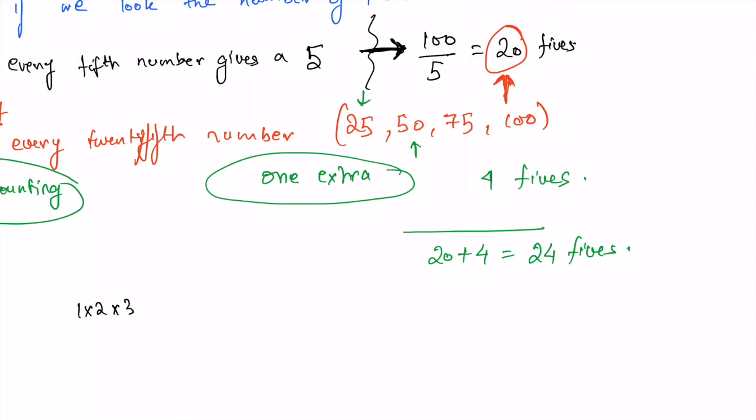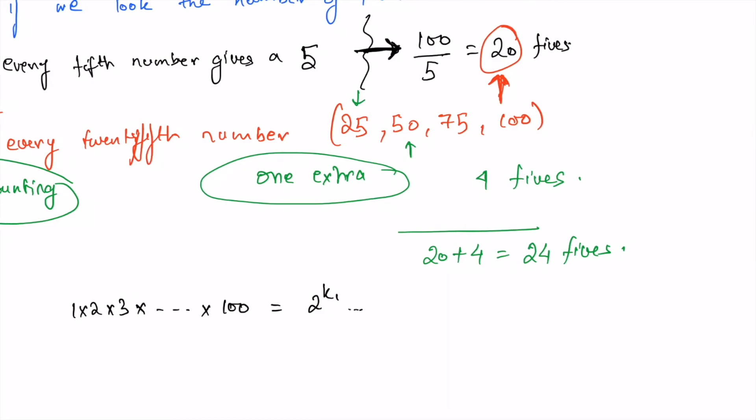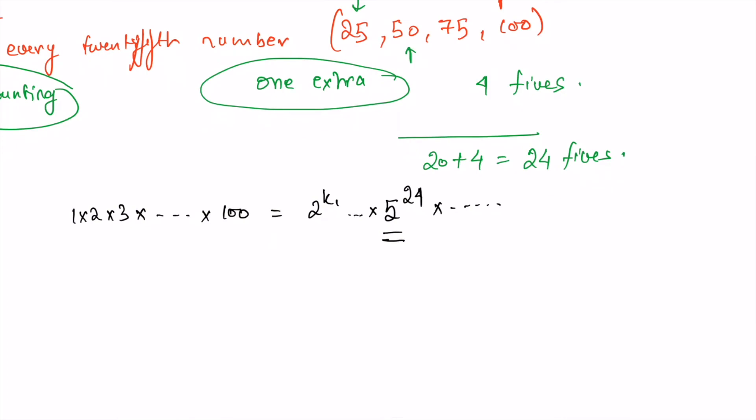So this product, one times two times three up to hundred, this product will have 2 to the power something, of course, times 5 to the power twenty-four, and the other primes will also be there. Now each of these twenty-four prime fives will pair up with twenty-four twos, and there are of course many more twos available to produce twenty-four tens in this product, which means we will have twenty-four zeros at the end of this product.